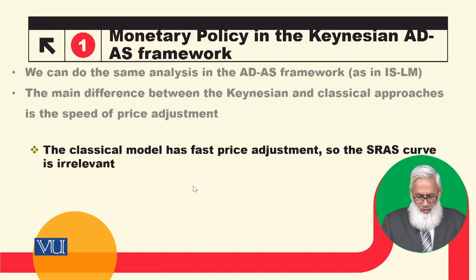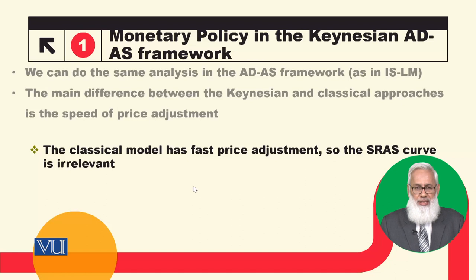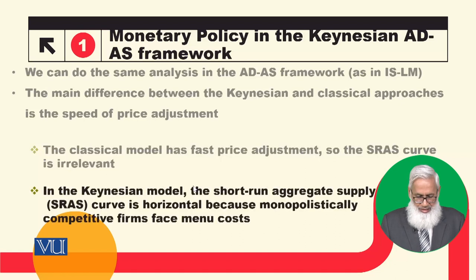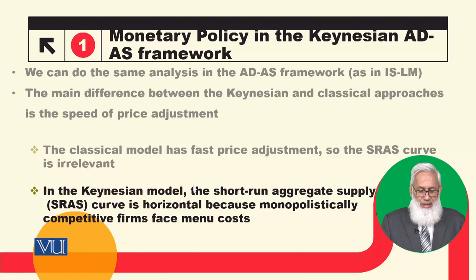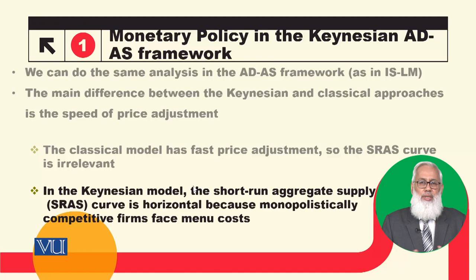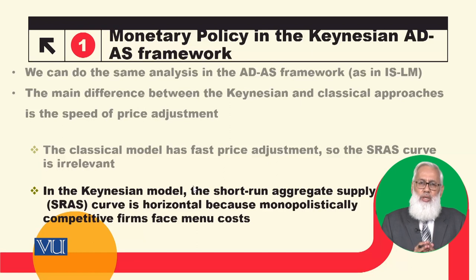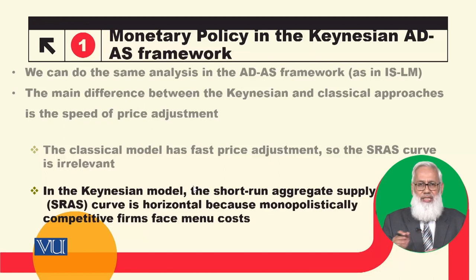In the Classical model, fast price adjustment makes the Short-run Aggregate Supply Curve irrelevant. Whereas in the Keynesian model, the Short-run Aggregate Supply Curve is horizontal, because monopolistically competitive firms face menu costs. We have discussed that monopolistic competition and menu costs result in prices being fixed in the short run. So the Short-run Aggregate Supply Curve will be a horizontal line.